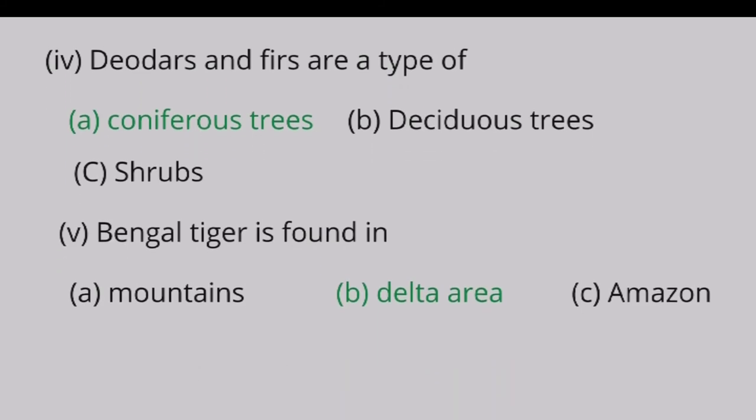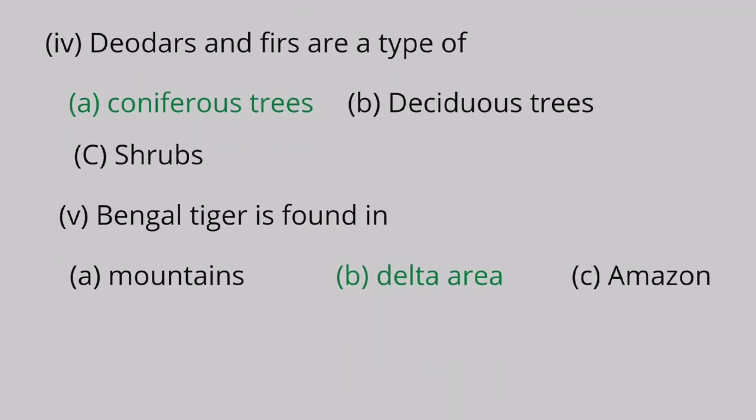Question 4: Deodars and firs are a type of A. coniferous trees, B. deciduous trees, C. shrubs. The correct answer is coniferous trees. Question 5: Bengal tiger is found in A. mountains, B. delta area, C. Amazon. The correct answer is delta area.